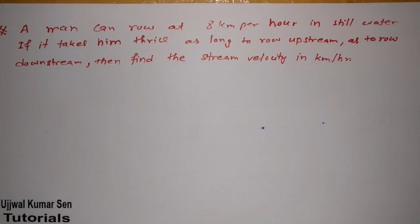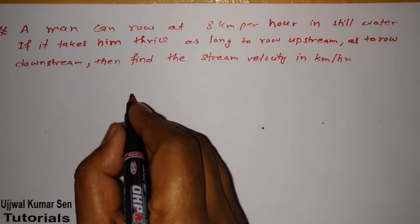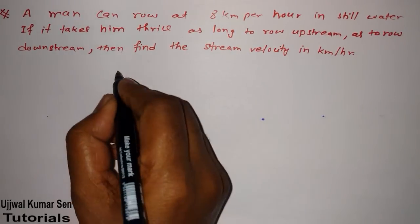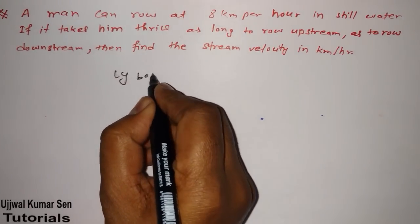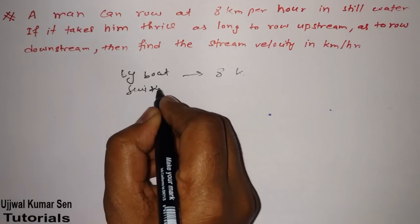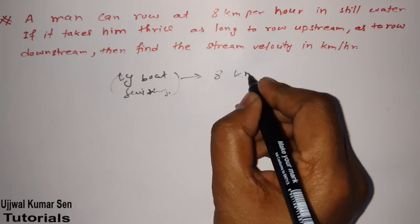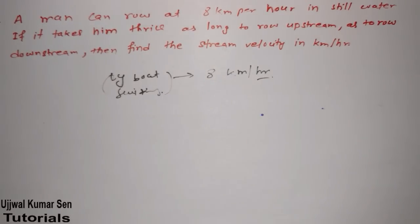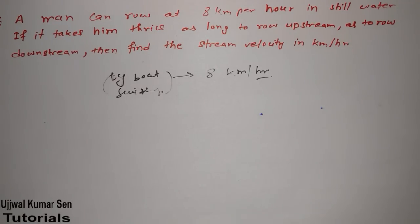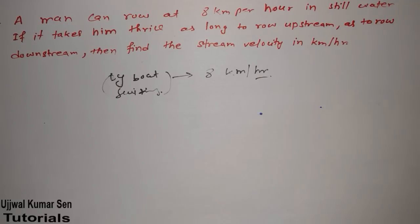I wanted to share with you this question. So, a man can row at 8 km per hour, okay? That means, the man can go by boat, you can say, okay? A man can go by boat, by boat, suppose that. And it's 8 km or maybe swimming, you can say. So, 8 km per hour. The person is rowing 8 km per hour. In still water.